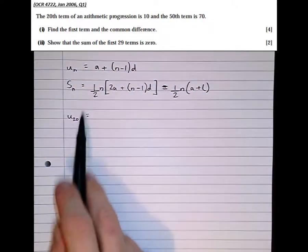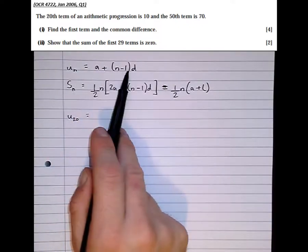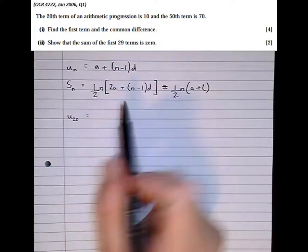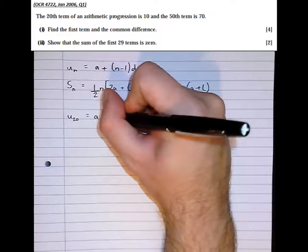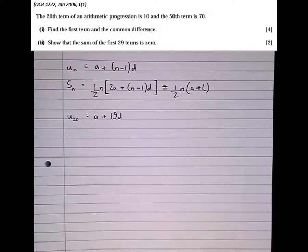so it's a plus (n minus 1), where n is 20, so a plus 19d. And it tells us that the 20th term is equal to 10.